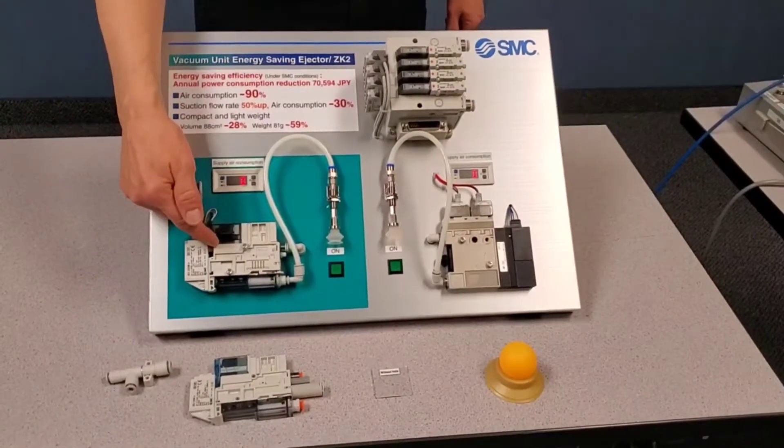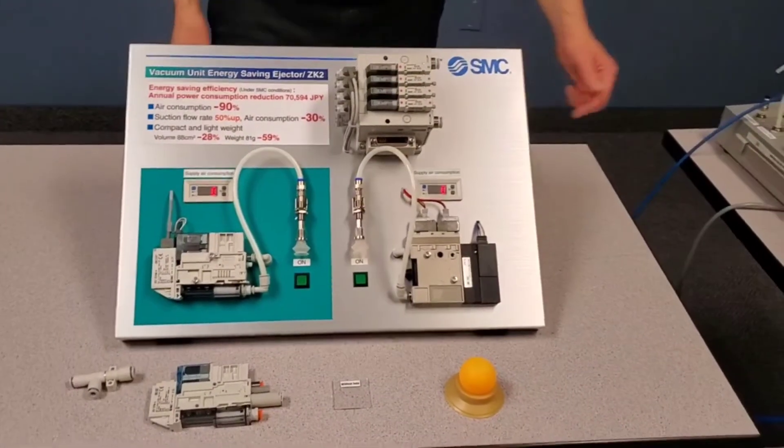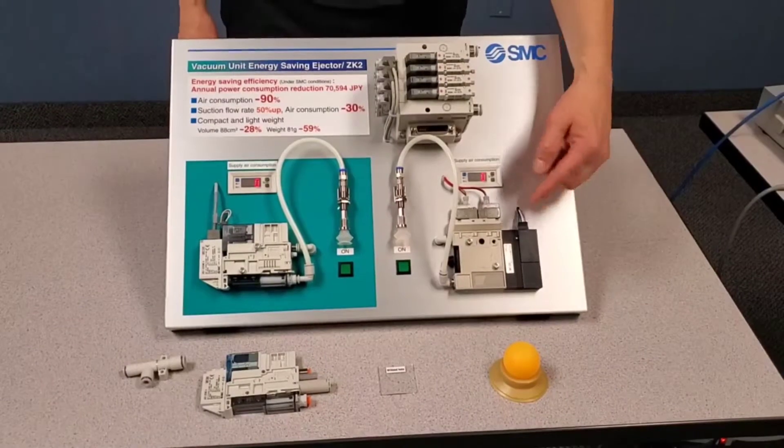The dual solenoid has an internal circuit with the pressure switch. The legacy ZM series has a switch but no internal circuit.